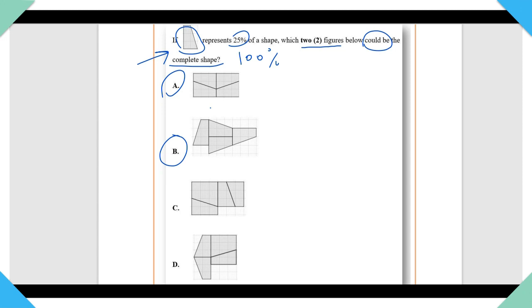What this problem is really testing is your ability to identify a figure when it is positioned in different ways. C could not be right because this part here is clearly not matching the size of our figure. Same thing with D. That size, this part here is too big.